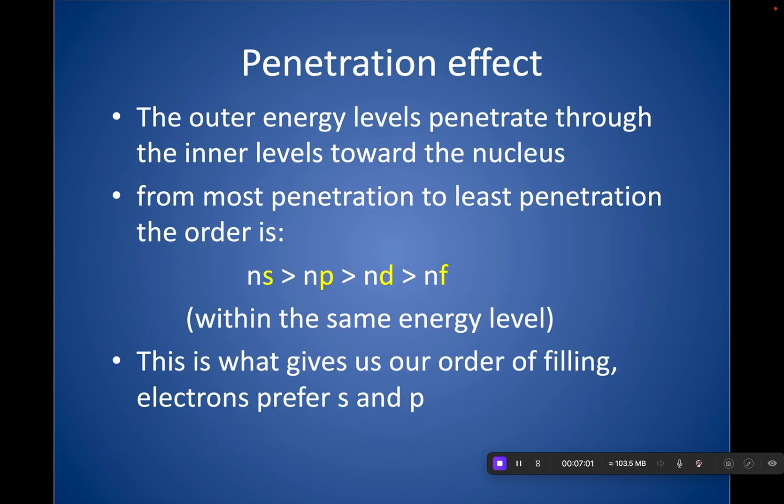There's something called penetration effect, and it's that the outer energy levels penetrate through the inner levels toward the nucleus. So remember that our electrons are constantly moving. So they don't stay in any one place all the time. Even our outer shells eventually, the electrons can get closer to the nucleus and then move back out. The most penetration to the least penetration in order is S has the most followed by P, followed by D, followed by F within the same shell. So 4S, let's say we're talking about the fourth shell, 4S can get a little closer to the nucleus, can penetrate the nucleus better than 4P, then 4D, and then 4F. And that's why this is the order that these subshells are filled.